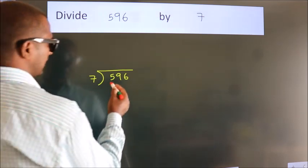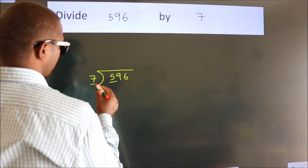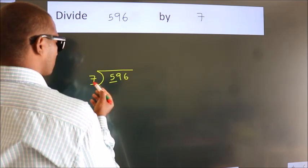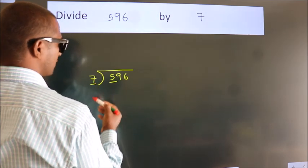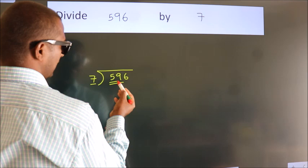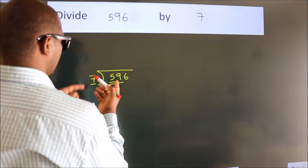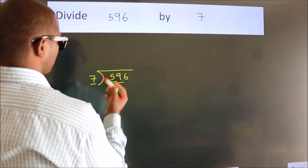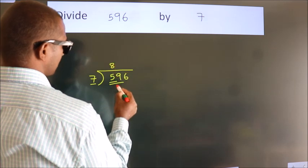Next. Here we have 5, here 7. 5 is smaller than 7. So we should take two numbers, 59. A number close to 59 in the 7 table is 7 times 8, 56.